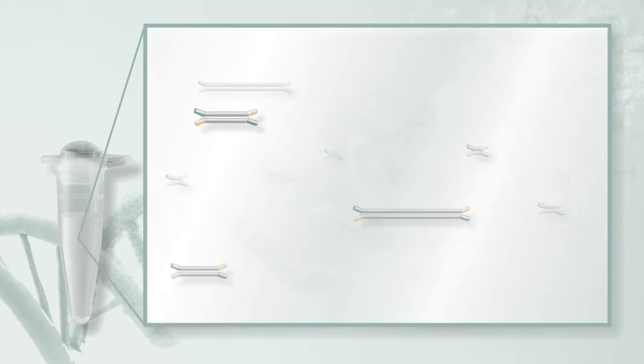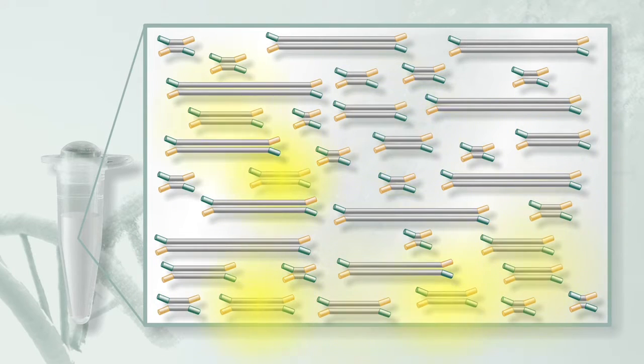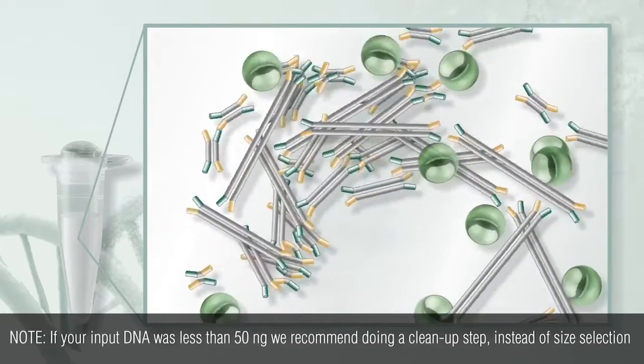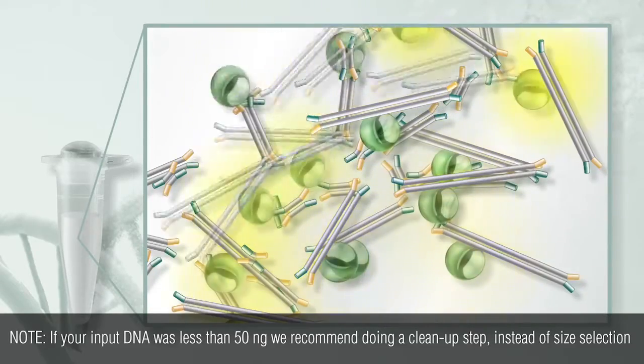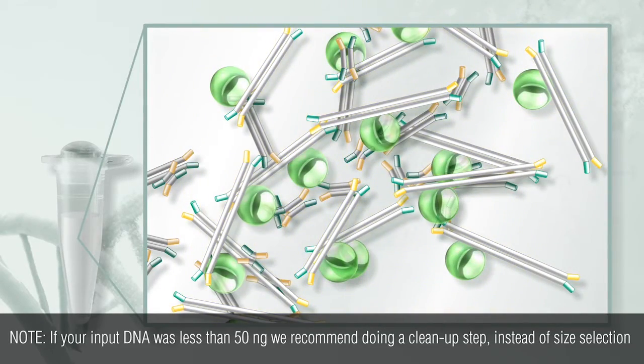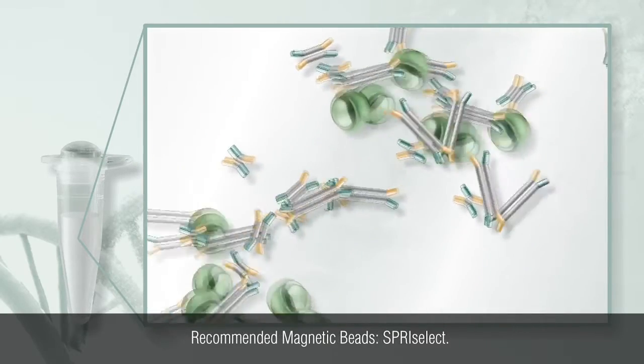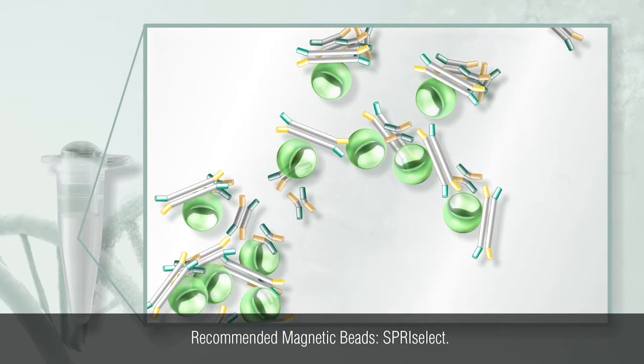Size selection enriches for molecules that were sheared to the desired size and have an adapter ligated to each end. Size selection is accomplished using magnetic beads. There are two rounds of selection. The first removes DNA fragments larger than the desired size and the second removes DNA fragments smaller than the desired size.